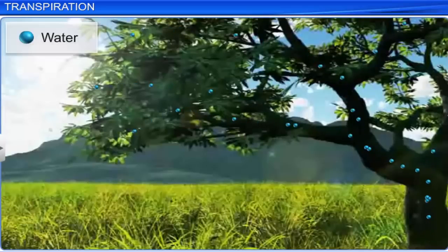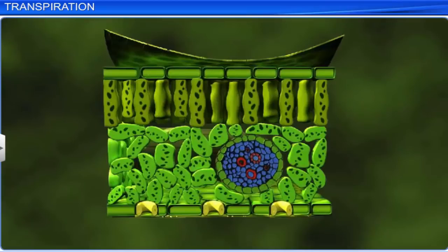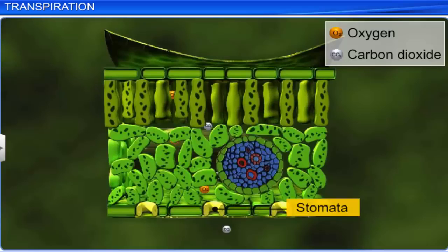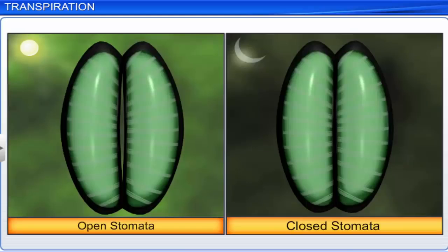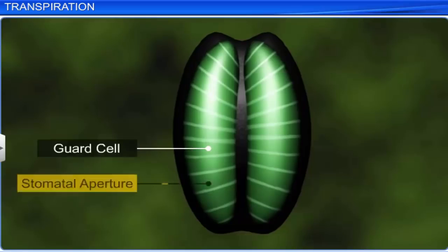Transpiration is the loss of water due to evaporation that occurs through pores in leaves called stomata. Stomata are not only the site of water loss for transpiration; they also help in the exchange of oxygen and carbon dioxide in the leaf. They remain open during the day when transpiration takes place, and close at night. Their opening and closing is directly impacted by the turgidity of guard cells present near the stomatal aperture.